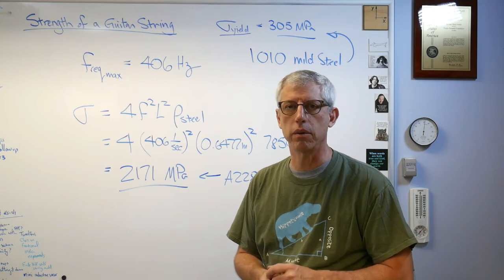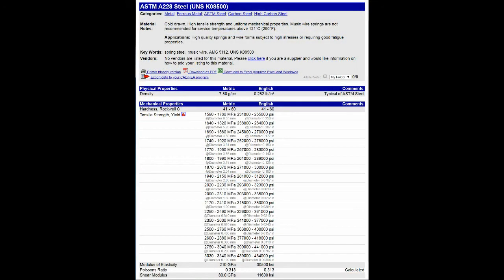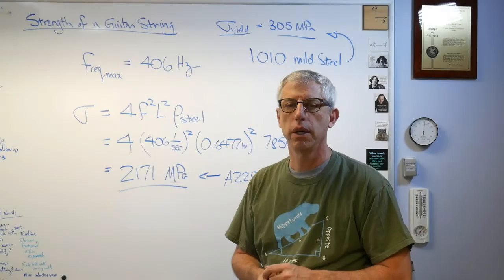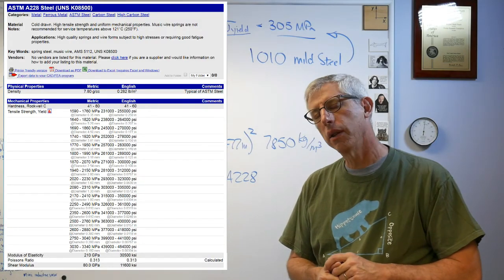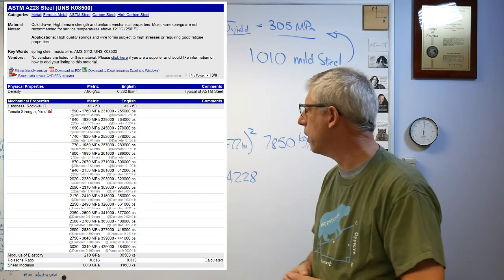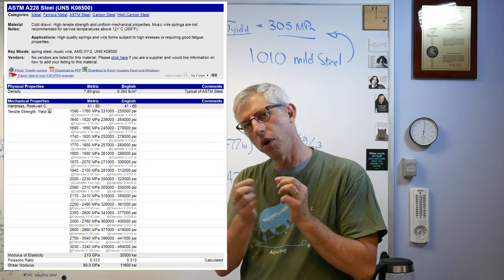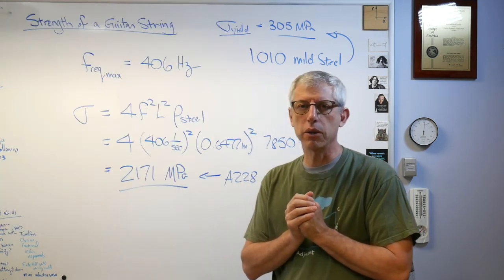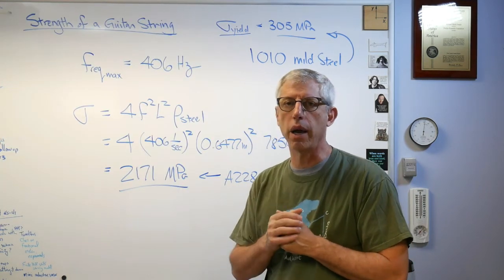In order to do that, you have to give up something. Well, what you give up is plasticity. It just breaks, it's basically a brittle failure. Now if you go on MatWeb, you're going to notice one thing, and here's a screenshot of MatWeb.